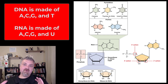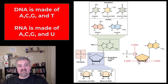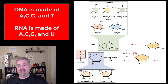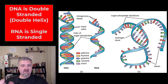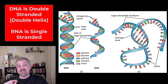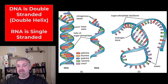As far as the nucleotides themselves or the bases: DNA is made of A, C, G, and T. RNA is made of A, C, G, and U. So thymine is replaced by its cousin uracil when you make RNA. DNA is double-stranded — this here is the double helix, looks like a rope ladder twisted on itself — made of A, C, G, and T, and the sugar is deoxyribose. RNA is going to be single-stranded, made of A, C, G, and U, and the sugar in that backbone is ribose.